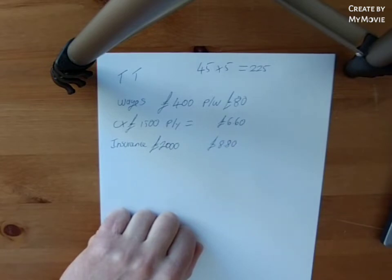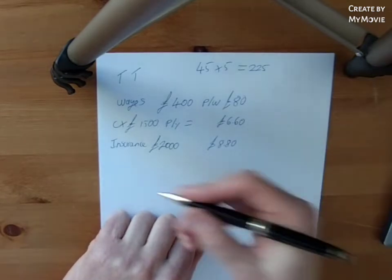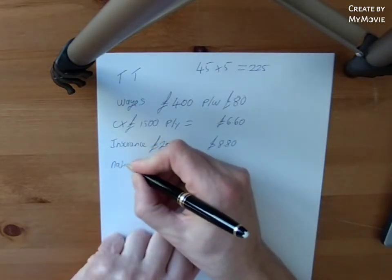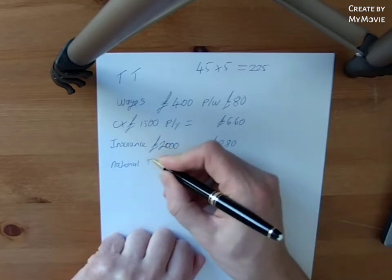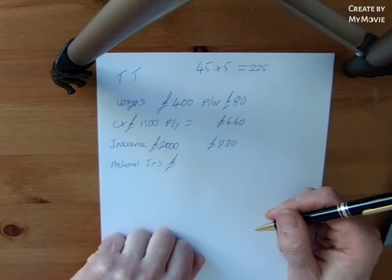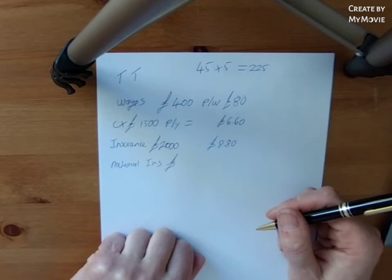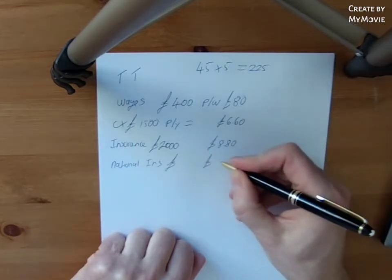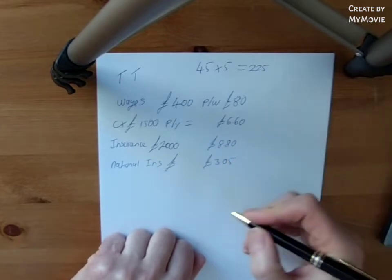What other costs can we have? Well, we're going to have mileage and fuel and depreciation, we're going to have to pay national insurance. Now, class two at the moment is £3 a week.